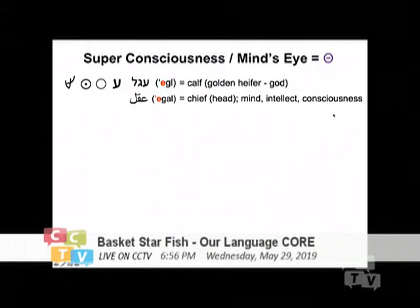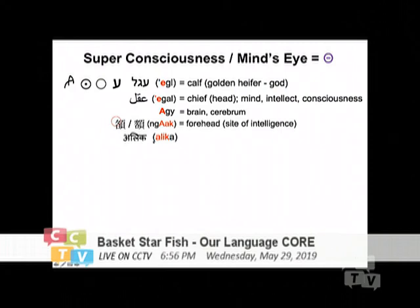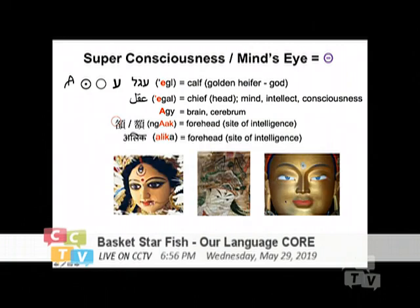That's why in Eastern philosophy, you always talk about consciousness. This is Hungarian — 'agi' actually means brain and cerebrum. And 'agi' in Cantonese actually also means — this part is actually an upside-down bull head — it actually means the forehead and the site of intelligence. And then 'alka' in Sanskrit. So you are going through Hebrew, Arabic, Hungarian, Chinese, Sanskrit — and they all mean something related to the head and intelligence. Okay.